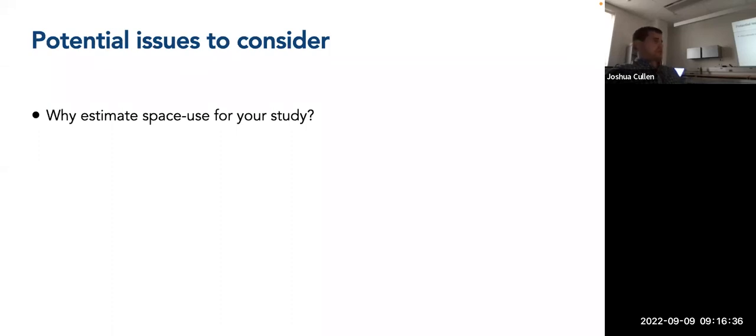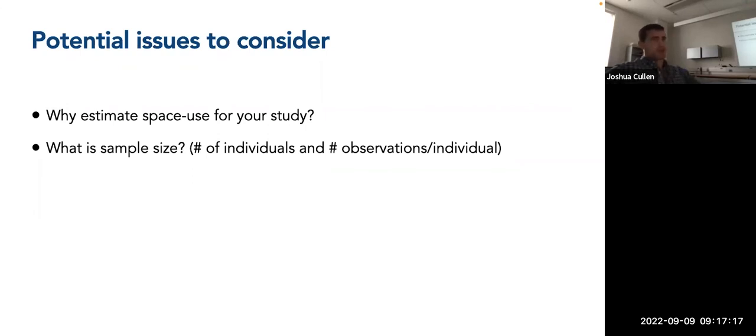So some potential issues to consider as you're designing your study or determining which method you would like to use is why estimate space use for your study. And there's a good paper from Luca Börger and John Fieberg from I think it's 2012 where it's like rephrase home range as a question. So you really need to think about why you're estimating space use besides just estimating it for the sake of doing it because other studies did it. So you want it to match up with your research objectives as to what you're trying to glean from measuring space use. Also, what's your sample size and this comes down to the number of individuals you tagged and tracked, as well as the number of observations for each of these individuals and the tracking duration.